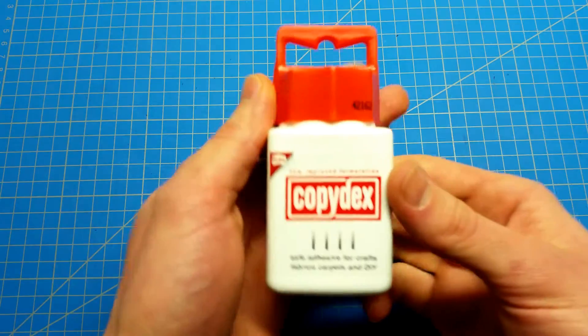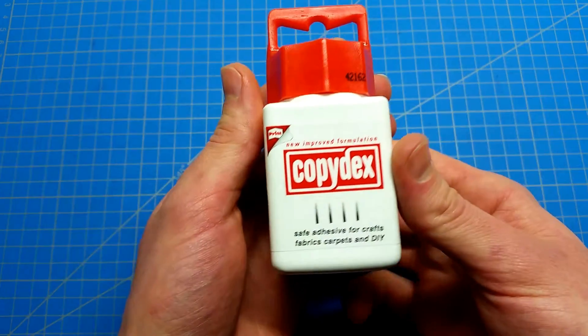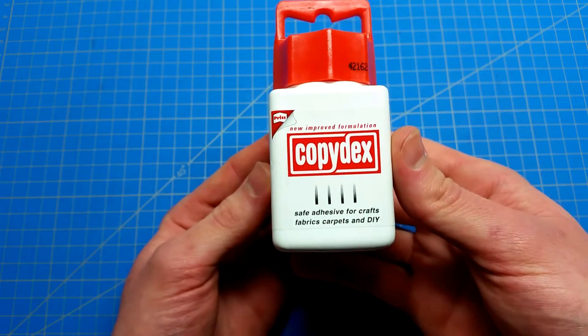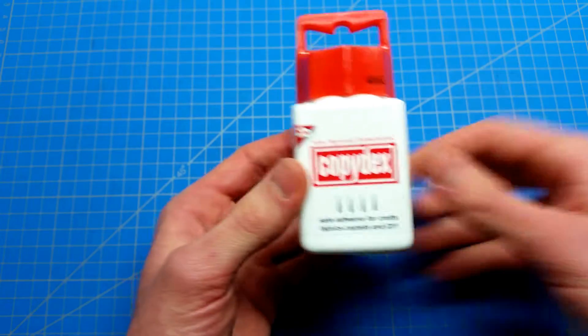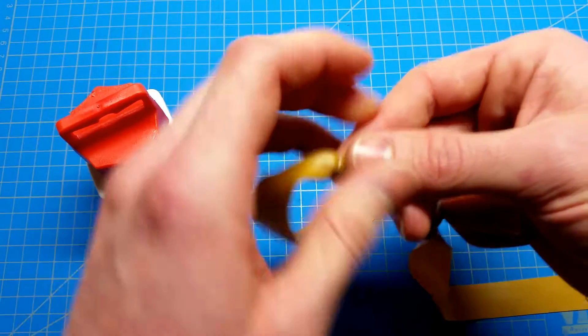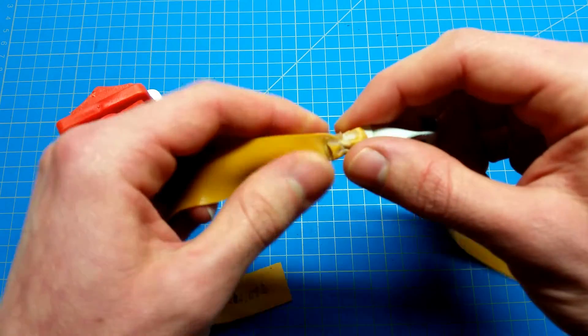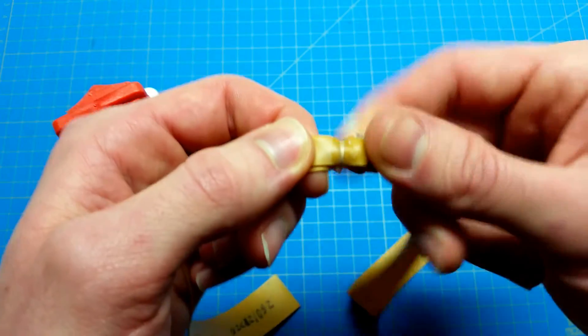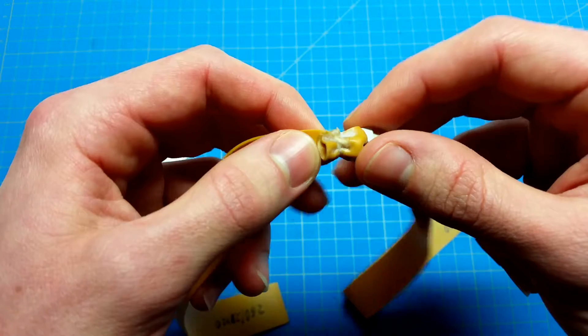For quite a time now I have tested this latex-based rubber cement called Copidex. I just apply it on the spot where my bands usually start to tear, right where the pouch is attached to the rubber.